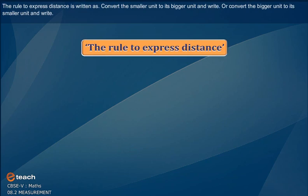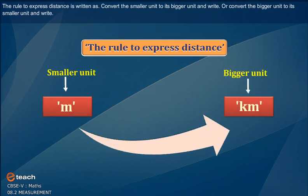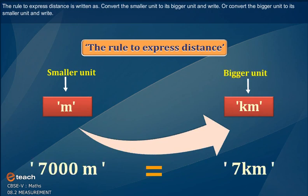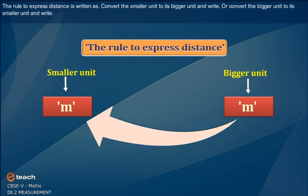The rule to express distance is written as: convert the smaller unit to its bigger unit and write, or convert the bigger unit into its smaller unit and write.